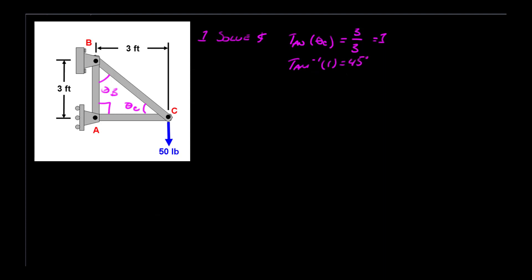So I can take the tangent inverse of one, which equals 45 degrees. By that expression, I can also say that my interior angles have to add up to 180 degrees. So the sum of theta B plus theta A plus 90 equals 180 degrees. Therefore, theta B also equals 45 degrees.